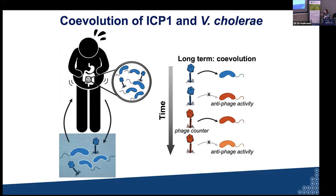The idea here is simple: we take our collection of phage and Vibrio, and we ask — if bacteria from the future are resistant to phage from the past, they have acquired some resistance trait, and we can attempt to find it. These are all tractable systems so we can use genetics and biochemistry to delve into mechanism. Similarly, we can take phage from the future and ask if they can now overcome those defensive barriers that once existed. We find evidence of that, and that's our system to study co-evolution.